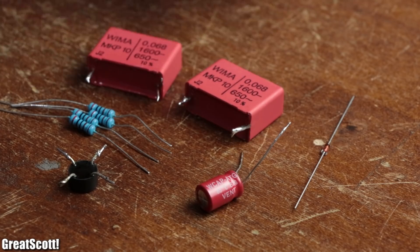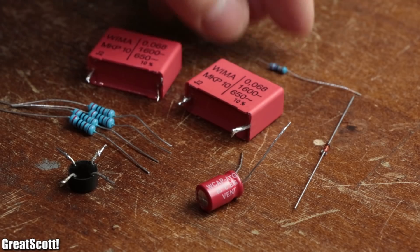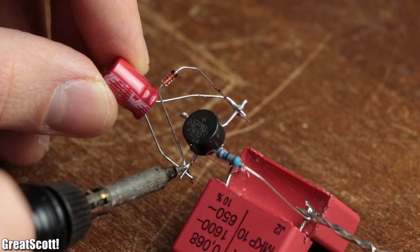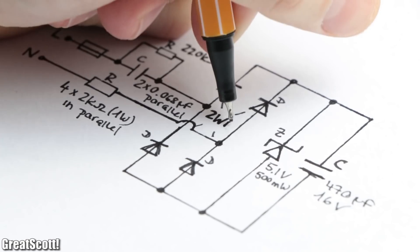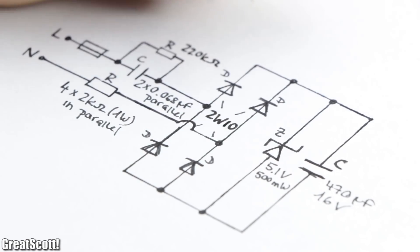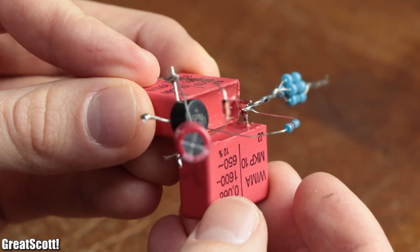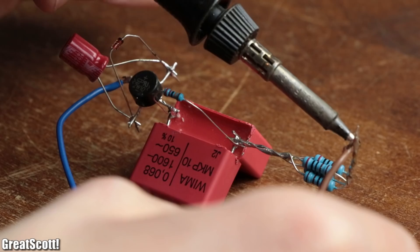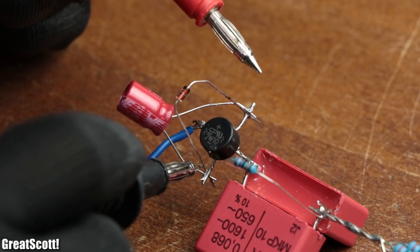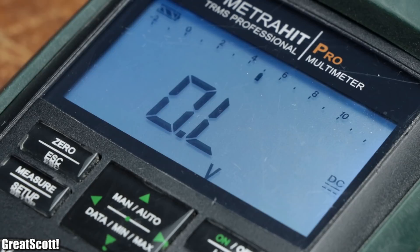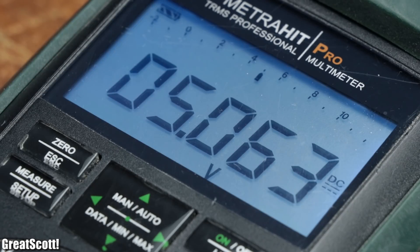So I gathered a couple of components I had lying around and built up the just described circuit, only with a few changed values for the components. As soon as my test circuit was complete, I hooked it up to mains voltage and measured the voltage on the output, which was around 5.1 volts. Perfect.